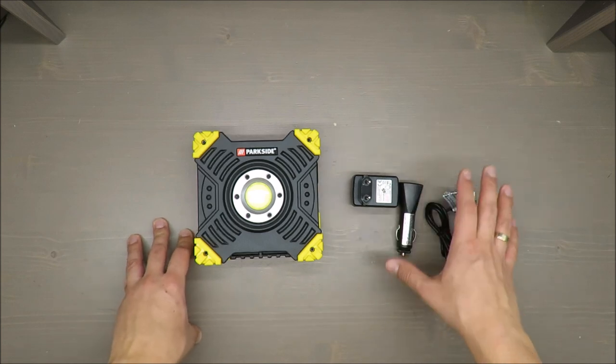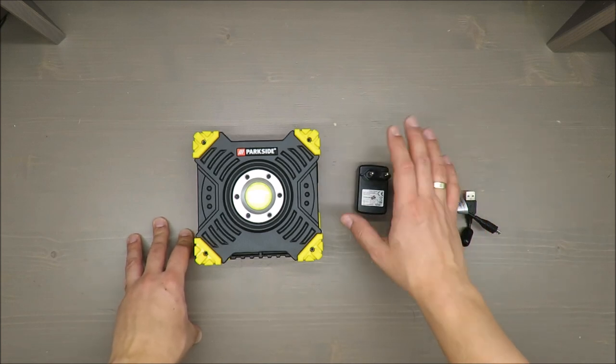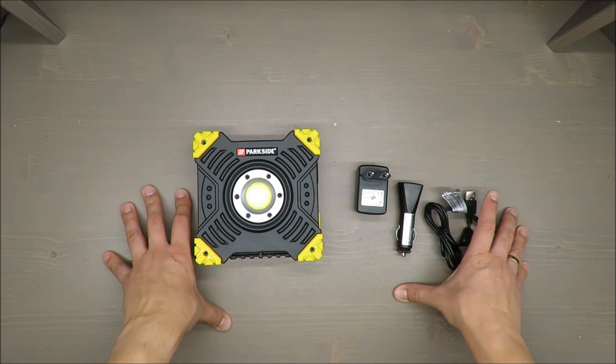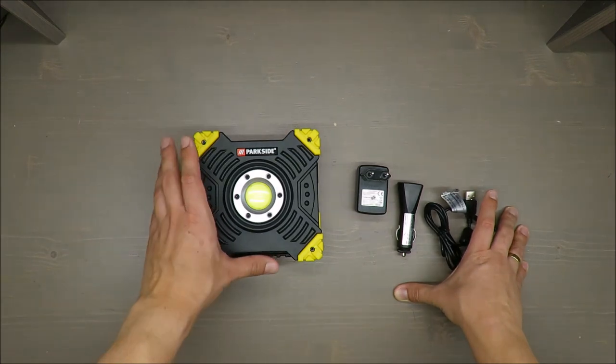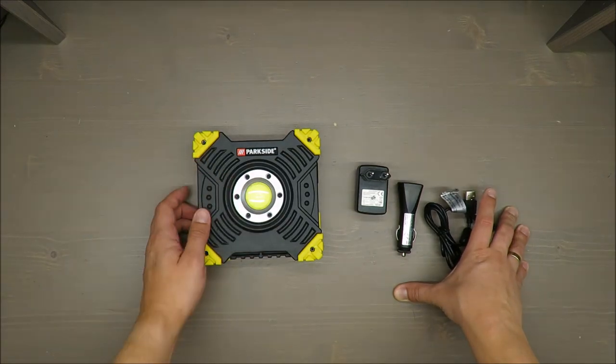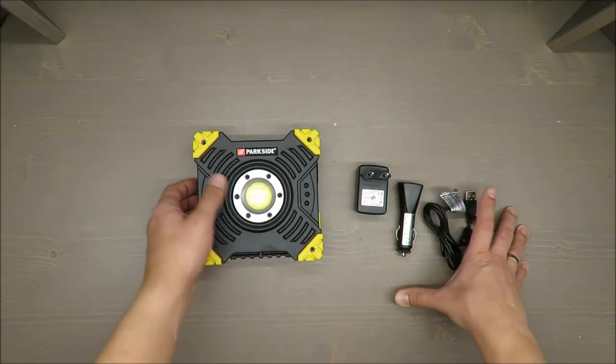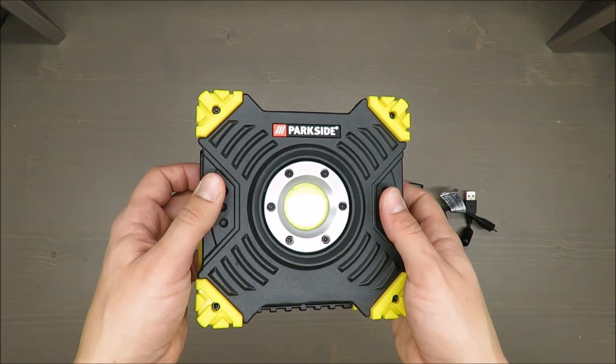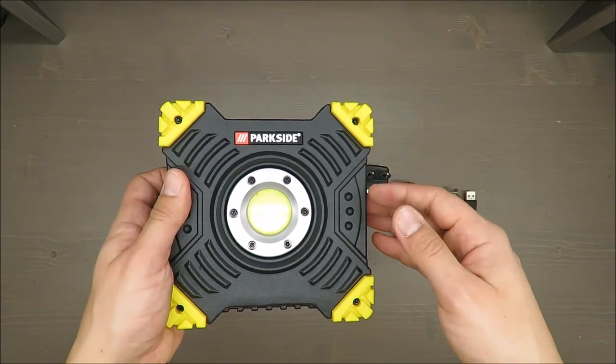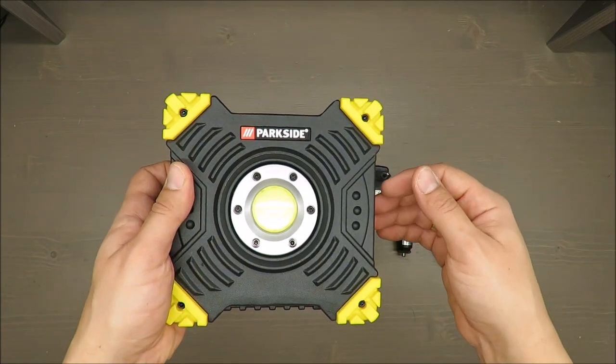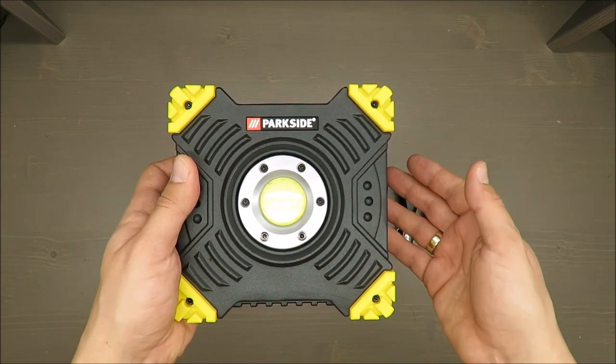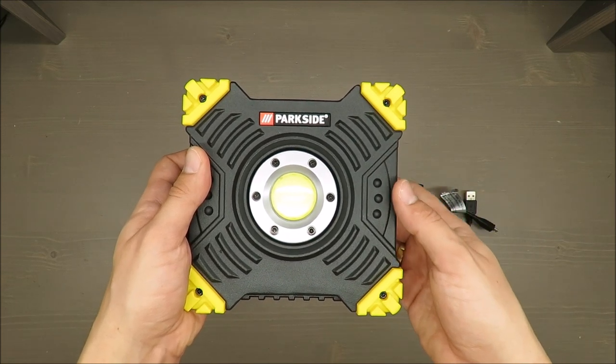Some basic features on the beginning. It's an LED with a focusing lens. It has four operation modes: maximum brightness, 50 percent, so-called eco mode, SOS, and red flashing light.